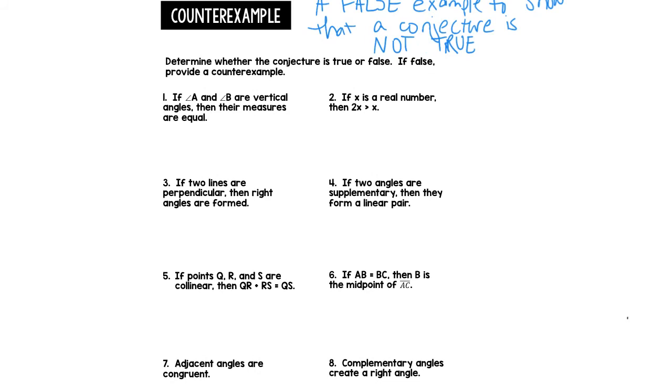If angle A and angle B are vertical angles, then their measures are equal. Well, let's draw what that looks like. We've got angle A and angle B. Angle A and angle B are vertical angles. Their angle measures are equal. That is true. That's a fact. We know it is.